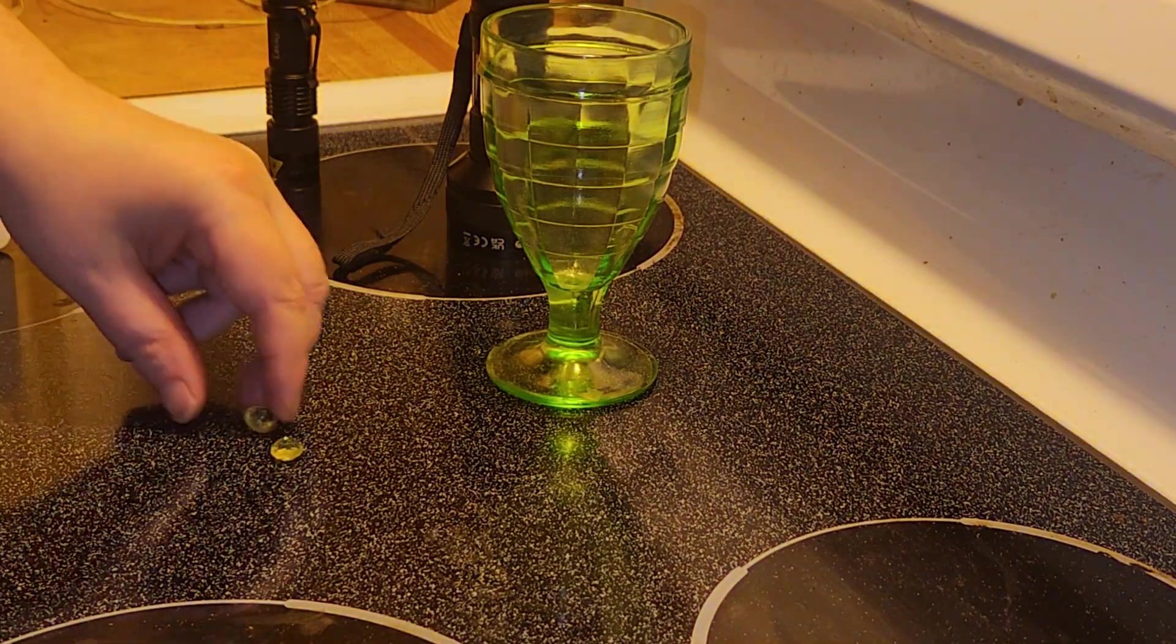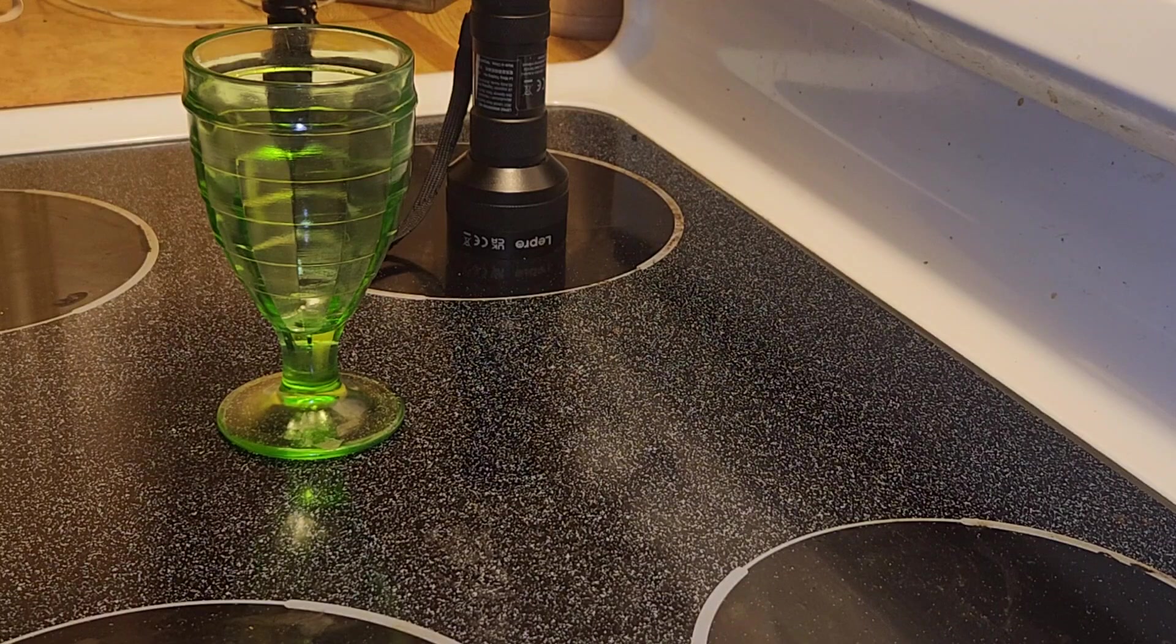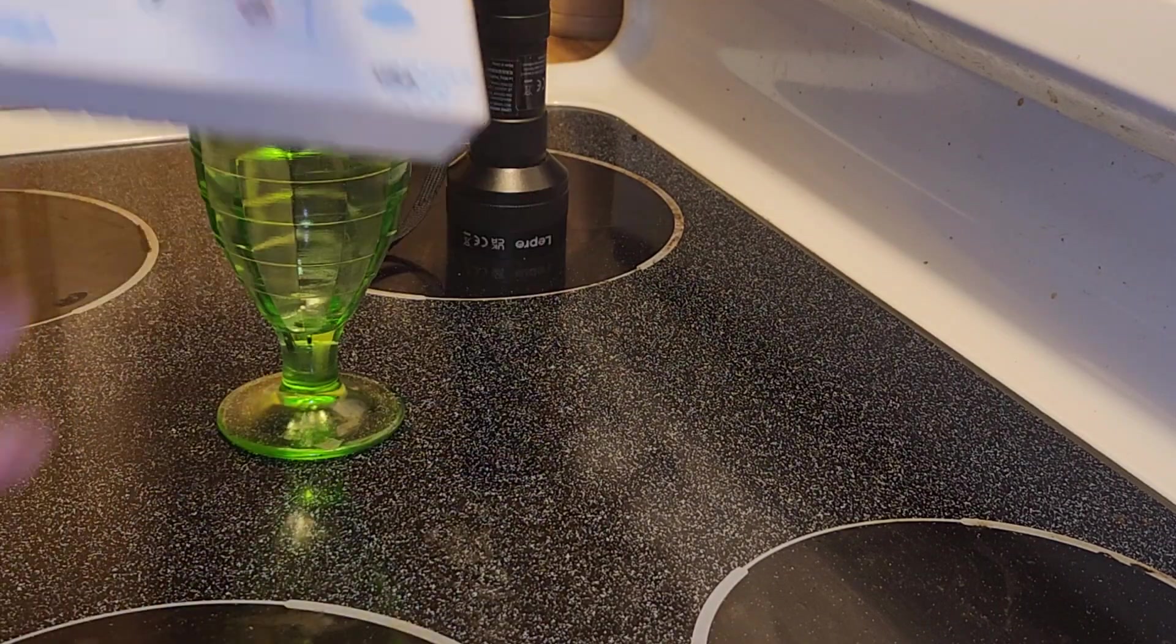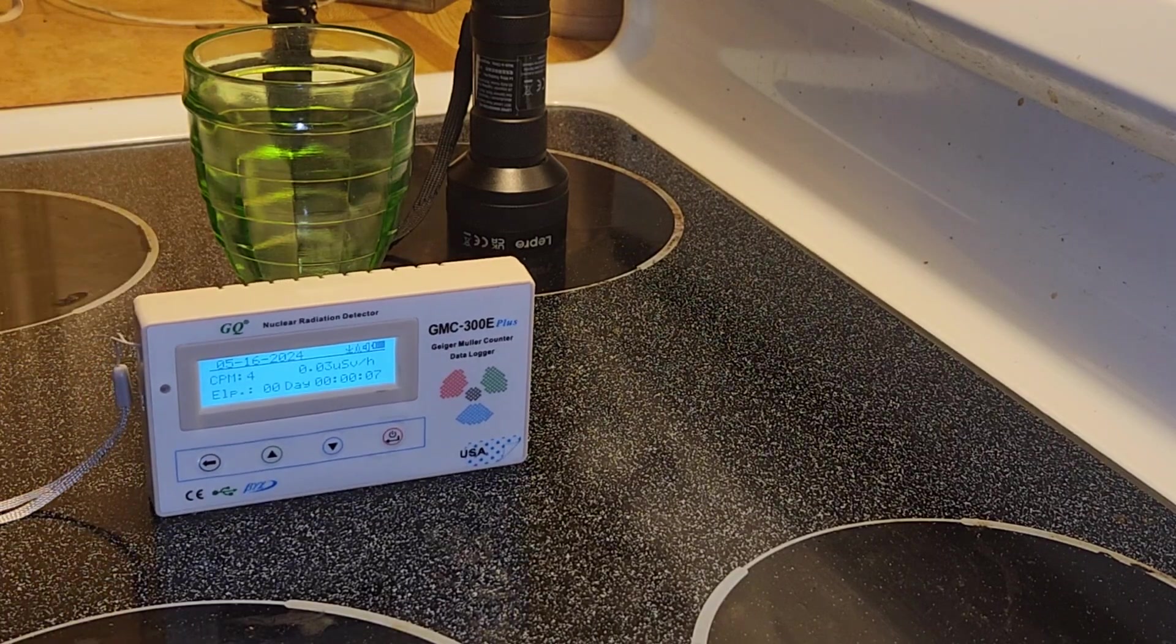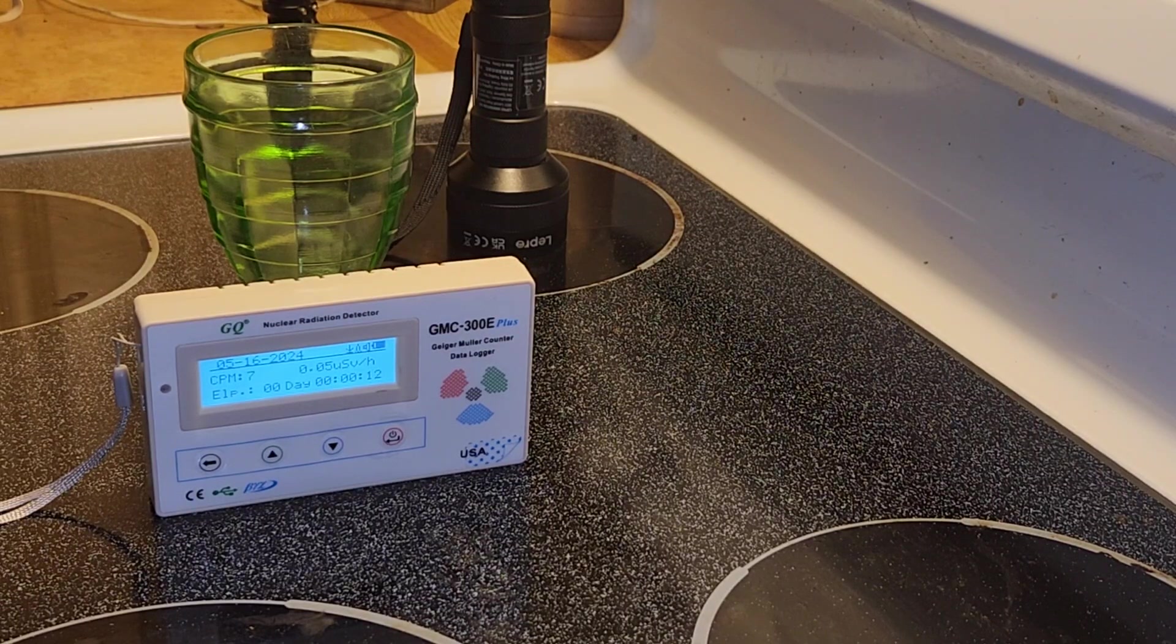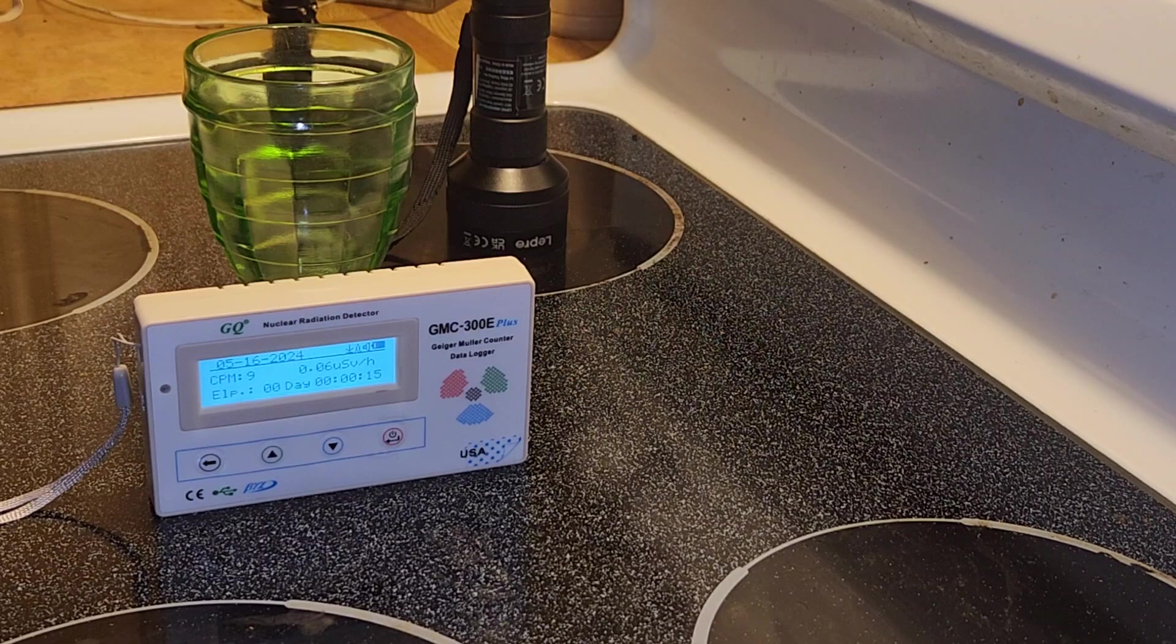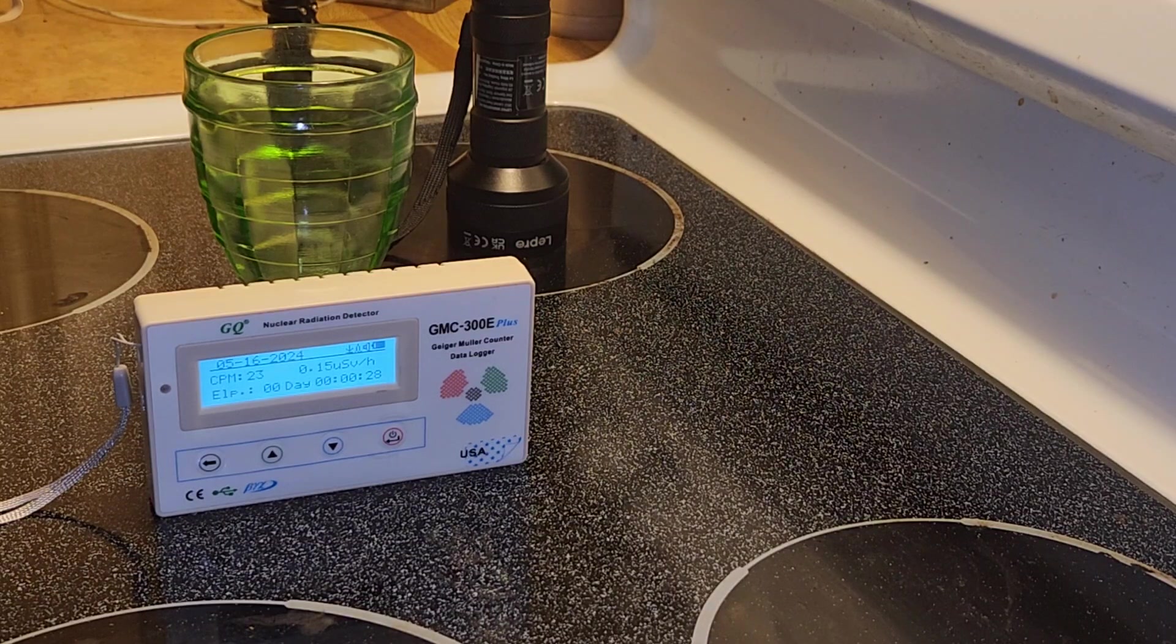We're first going to be detecting the radiation level for a minute using a Geiger counter. For depression uranium glass, which is five to twenty percent uranium, you should get a moderate amount of radioactive counts. At 27 seconds, it's counting 24 counts per minute.